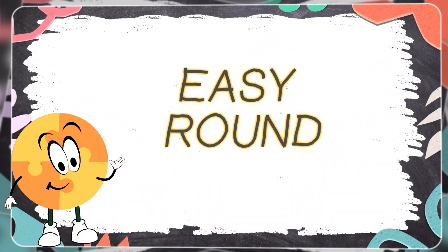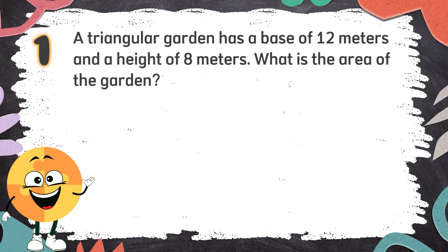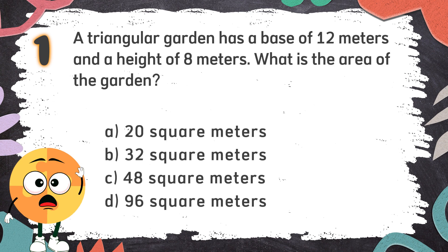Easy Round. Number 1: A triangular garden has a base of 12 meters and a height of 8 meters. What is the area of the garden? The choices are: A. 20 square meters, B. 32 square meters, C. 48 square meters, D. 96 square meters.